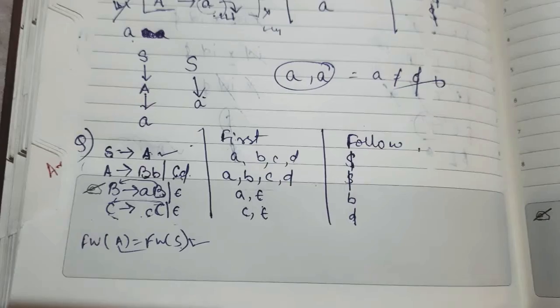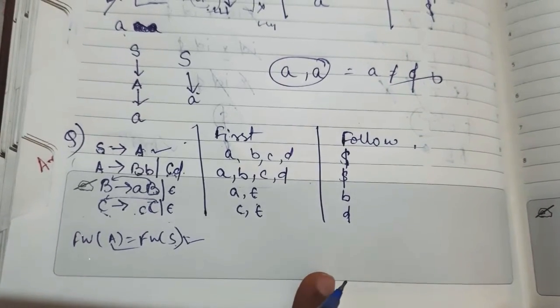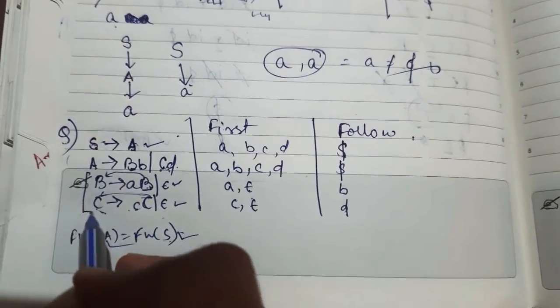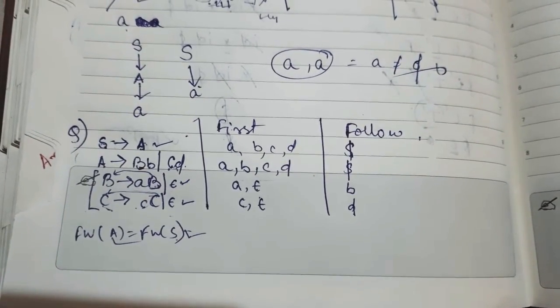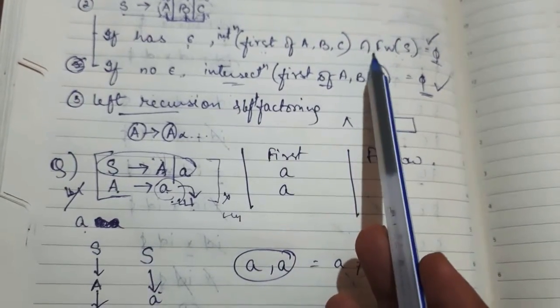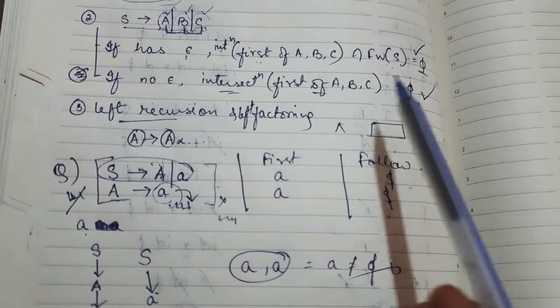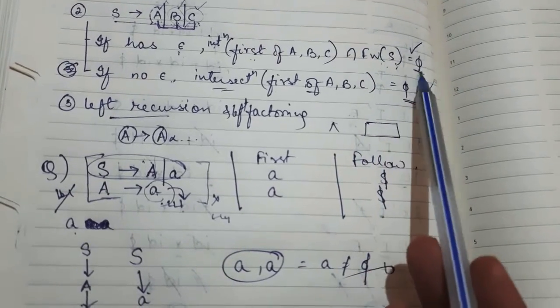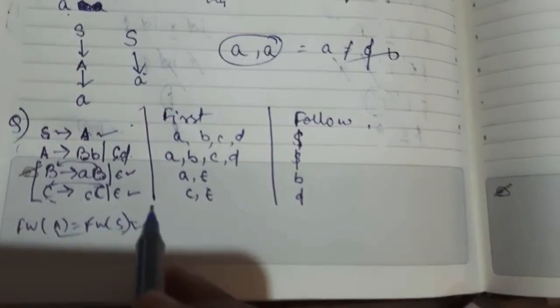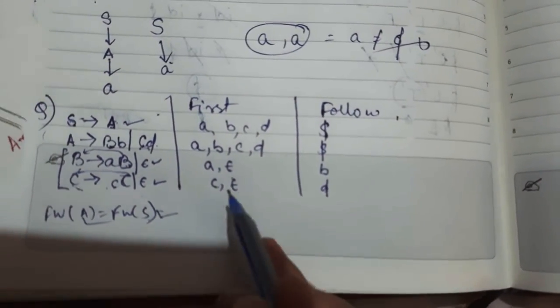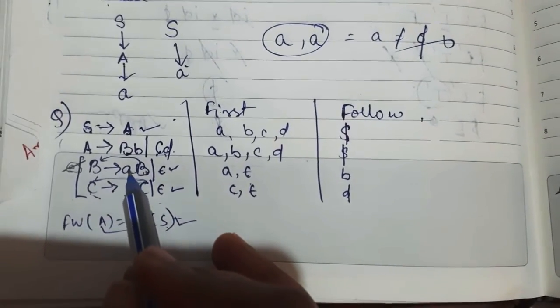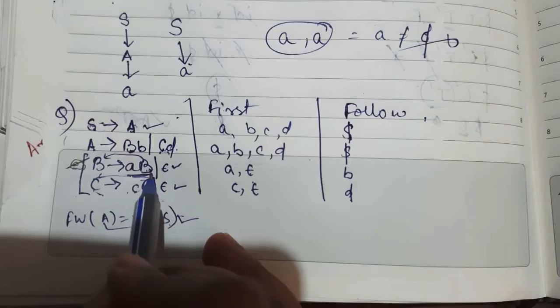Now these are having epsilon productions, so I need to see if the first intersection with the follow of the starting symbol is not initial but the previous symbol equals phi or not. Means first of A or first of this term intersection with follow of this, is it phi?